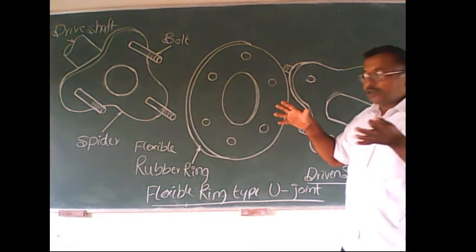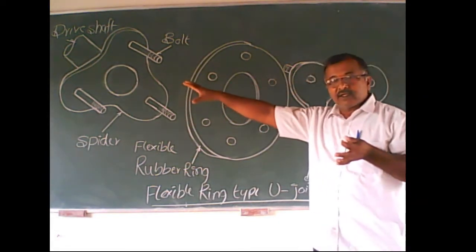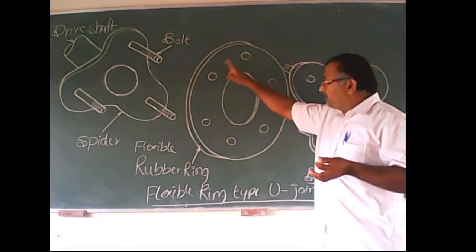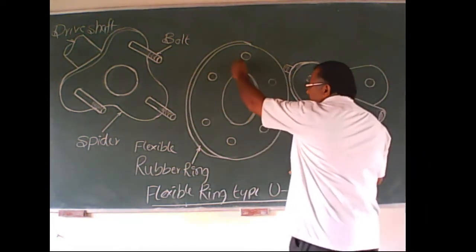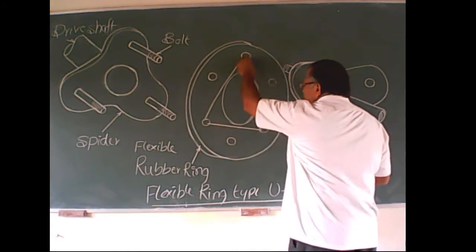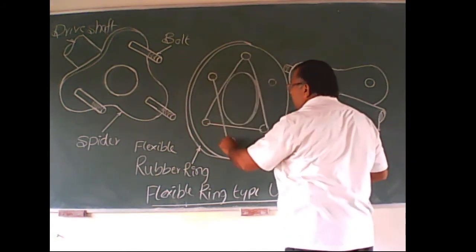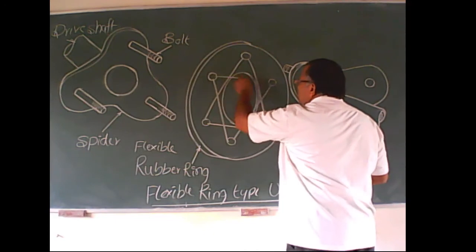Now, what about these six bolts? This side three, here this side, alternative parts. One arm, one spider connects these three bolts. And another spider connects these three bolts.